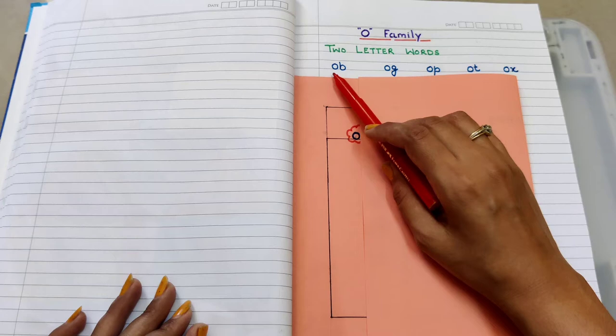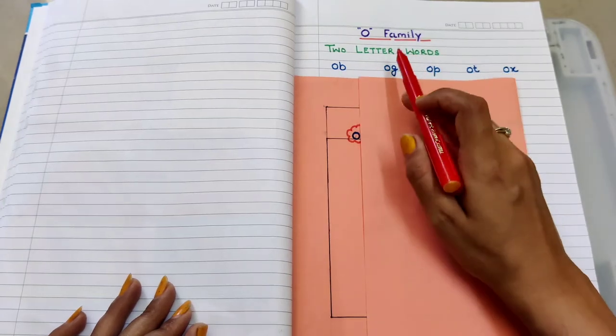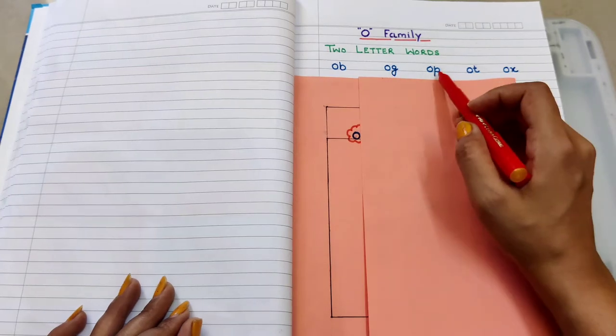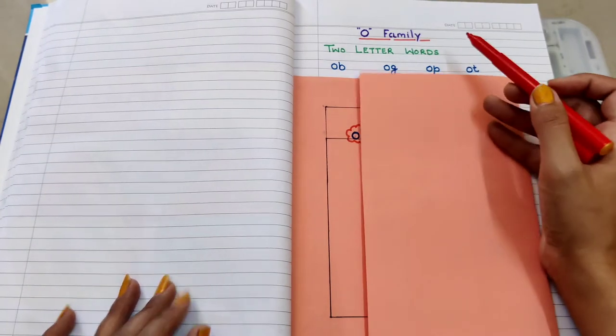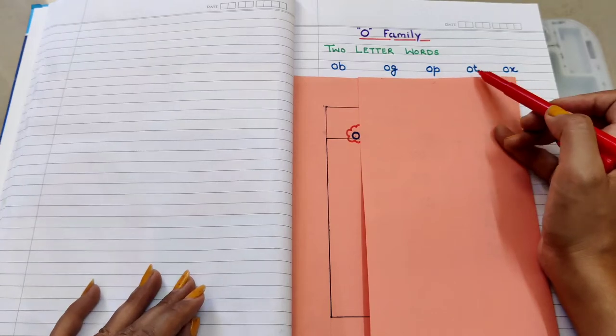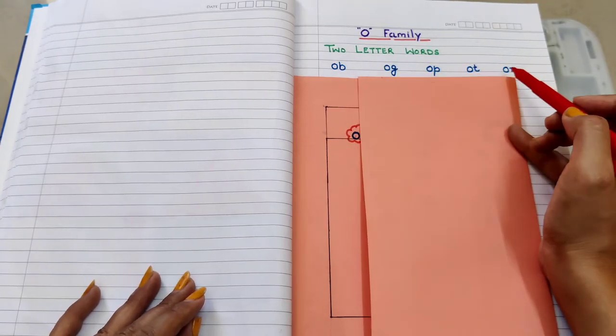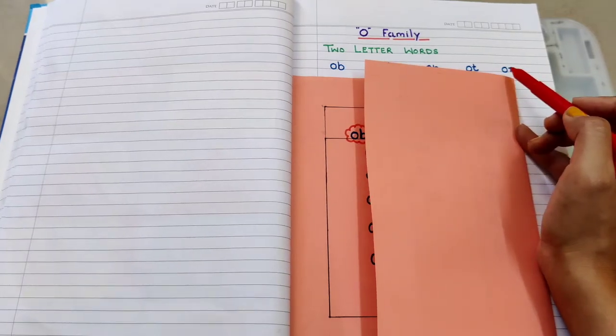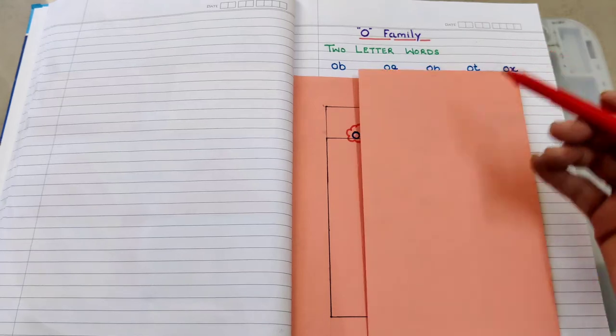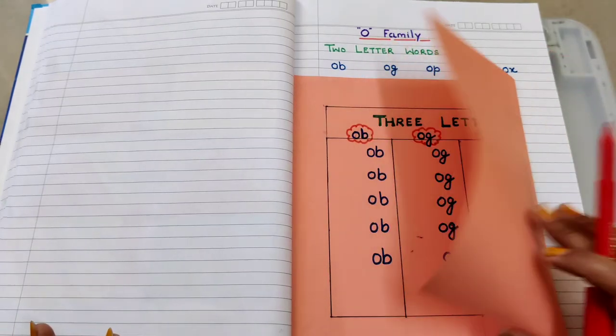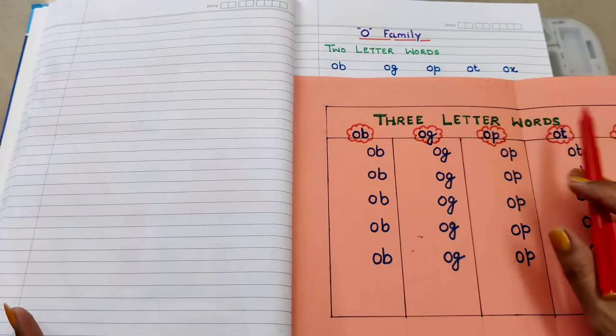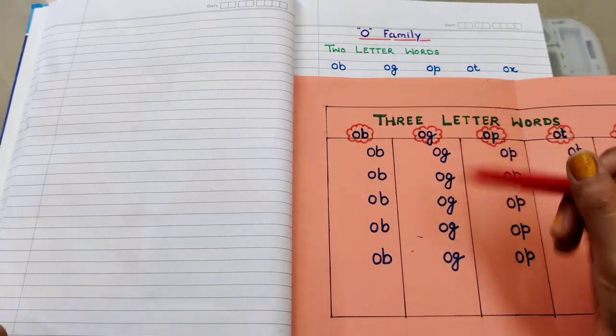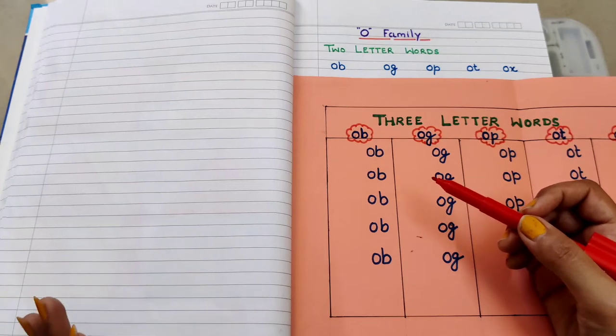Let's start. The sound of O is 'o' and the sound of B is 'b'. When we blend them it will be 'ob'. O and G - 'og'. 'Op', 'op', 'op'. 'Ot', 'ot'. 'Ox', 'ox'. This way we will learn two-letter words and then we will move towards three-letter words.